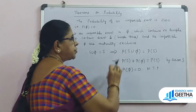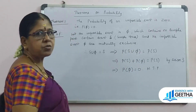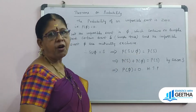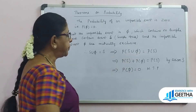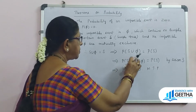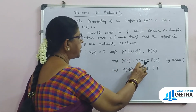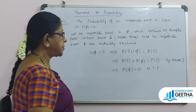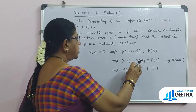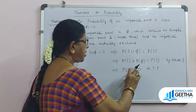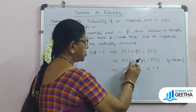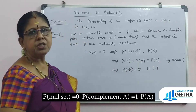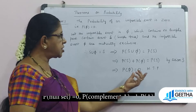Since S and π are mutually exclusive, we apply axiom 3 of probability: probability of S plus probability of π equals probability of S. This implies probability of π equals P(S) minus P(S), which is equal to zero. Hence the proof.